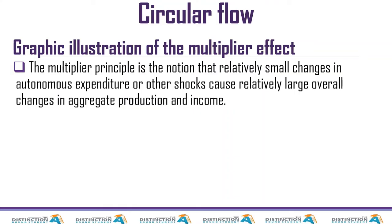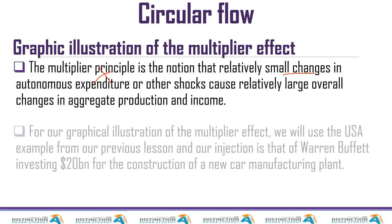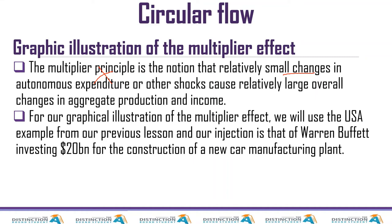So we say the multiplier effect can be described as a situation where a small change in spending causes a disproportionate change in aggregate demand and hence aggregate income. Right, I don't like this definition here; I like the one that I just said. So for our graphical illustration of the multiplier effect, we are going to use example number two from lesson number seven to make sense to you.